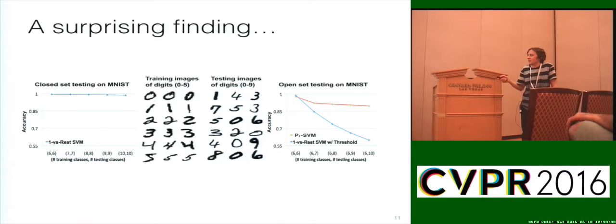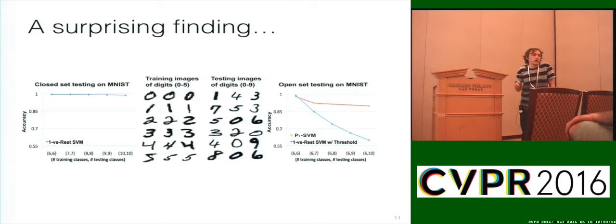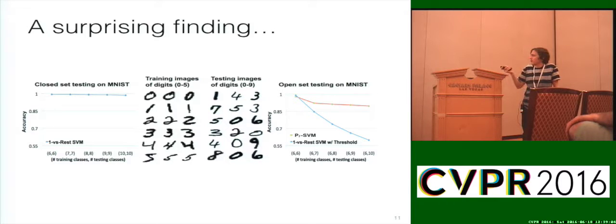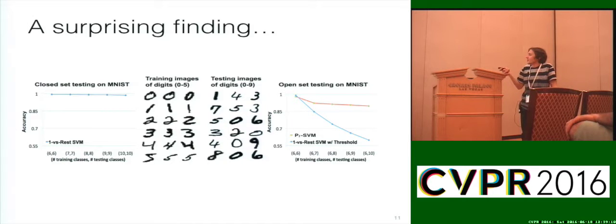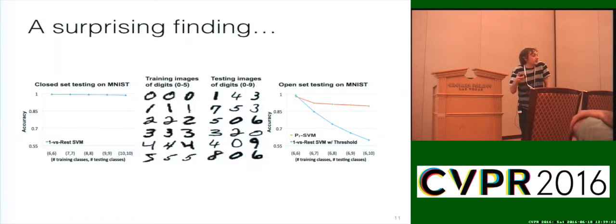But what's interesting: if you train on digits zero through five — six training classes — and then bring back at test time the classes you left out, six through nine, the performance drops quite drastically. One-versus-rest SVM, one-versus-rest SVM with a threshold applied for rejection ability — we're not at ceiling anymore. Even a state-of-the-art algorithm meant to deal with unknowns drops in performance. This is the most basic benchmark we have, and it turns out to be quite difficult once you start leaving things out at training time.